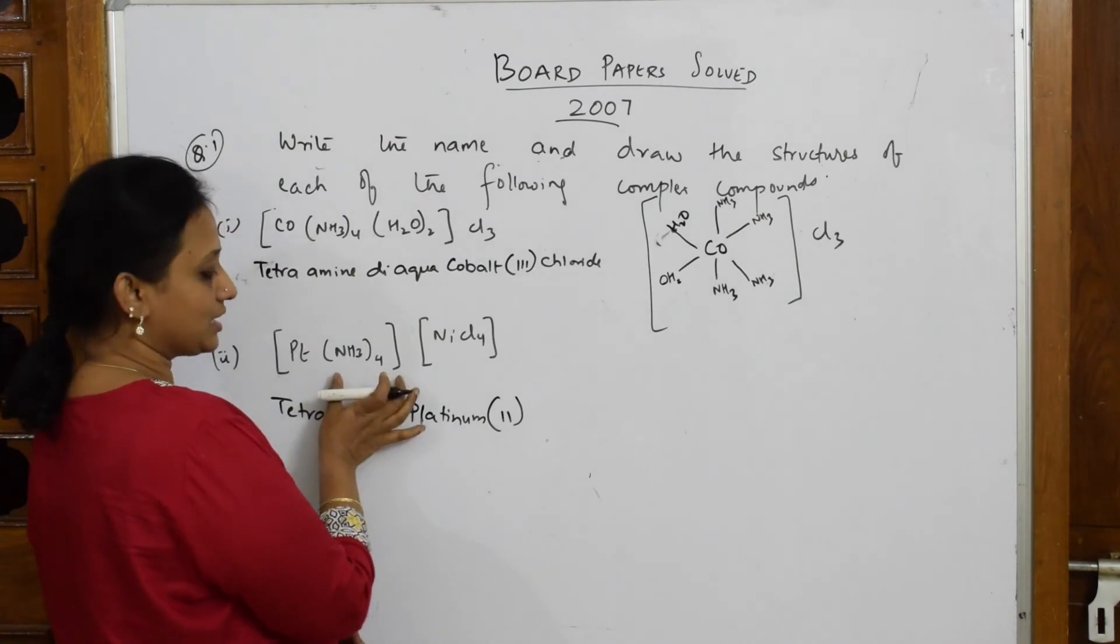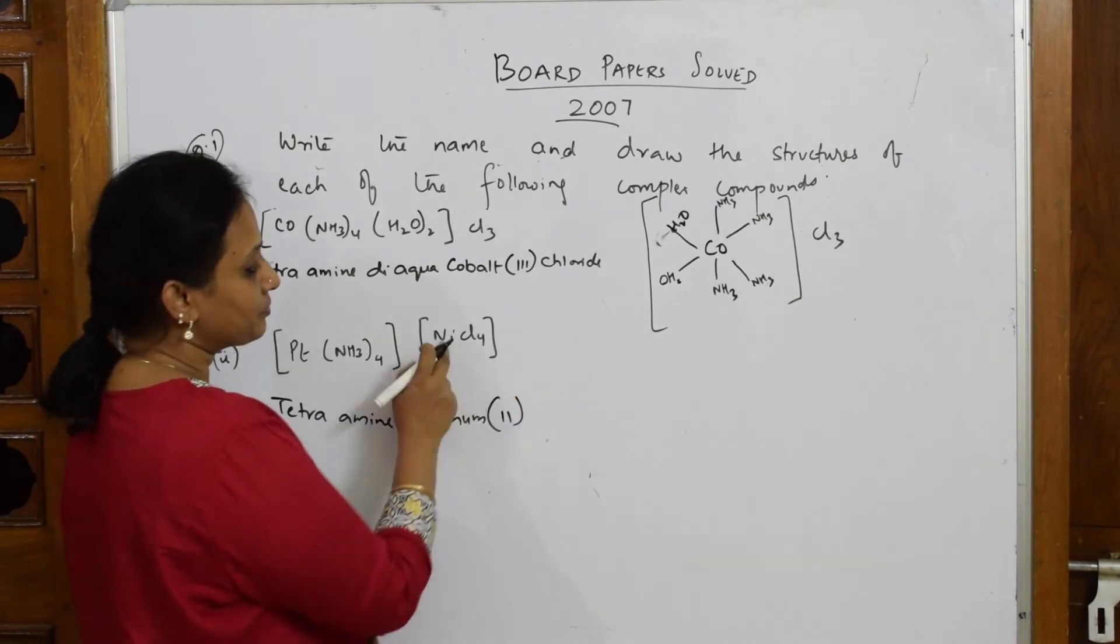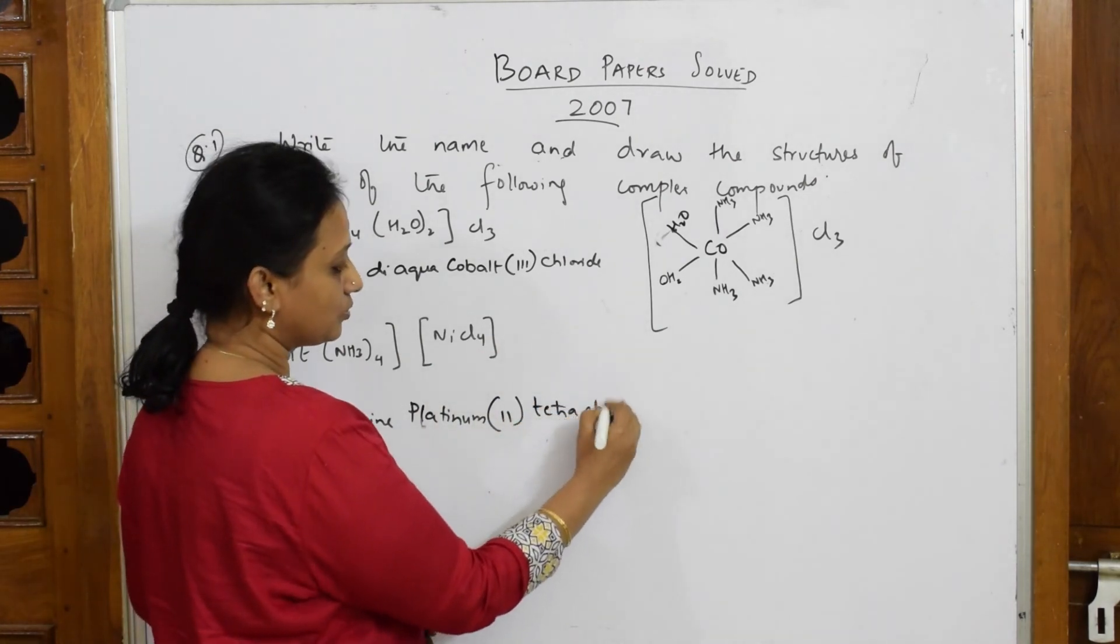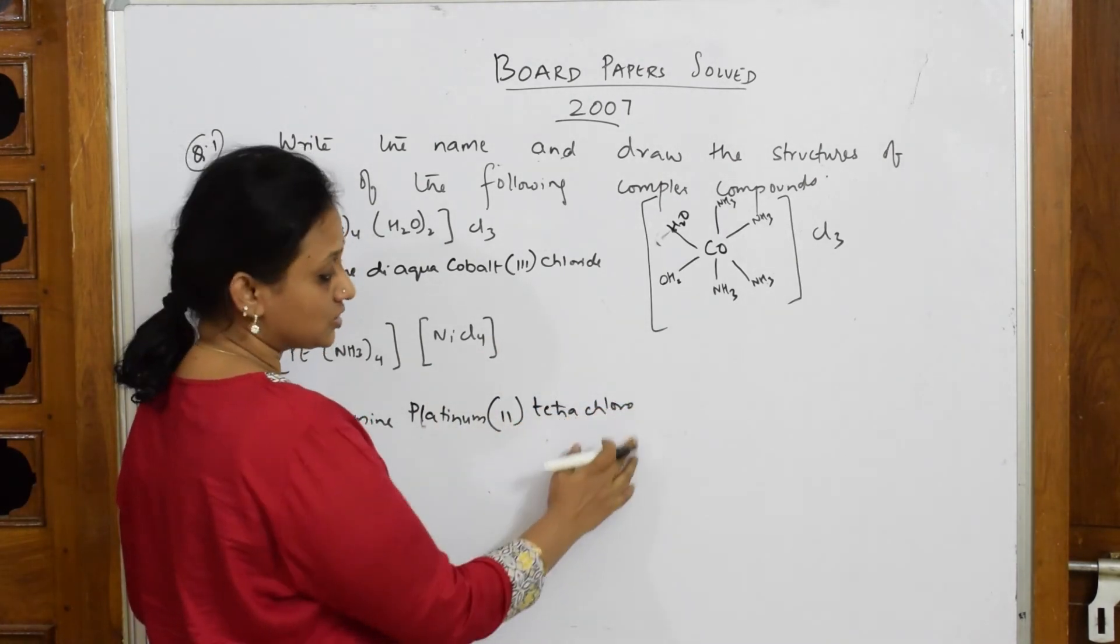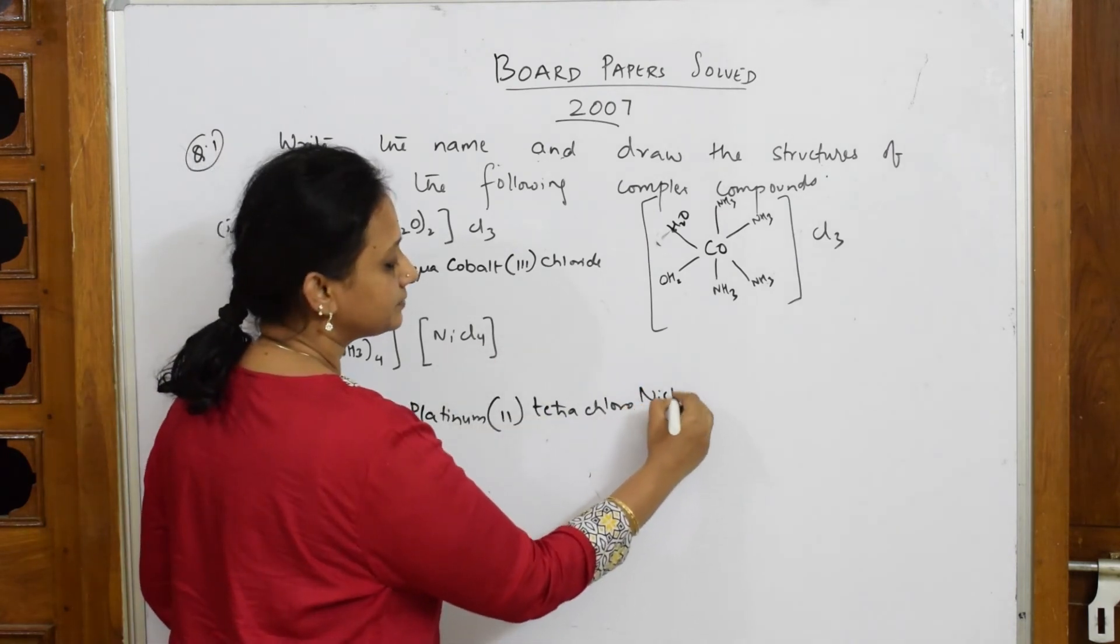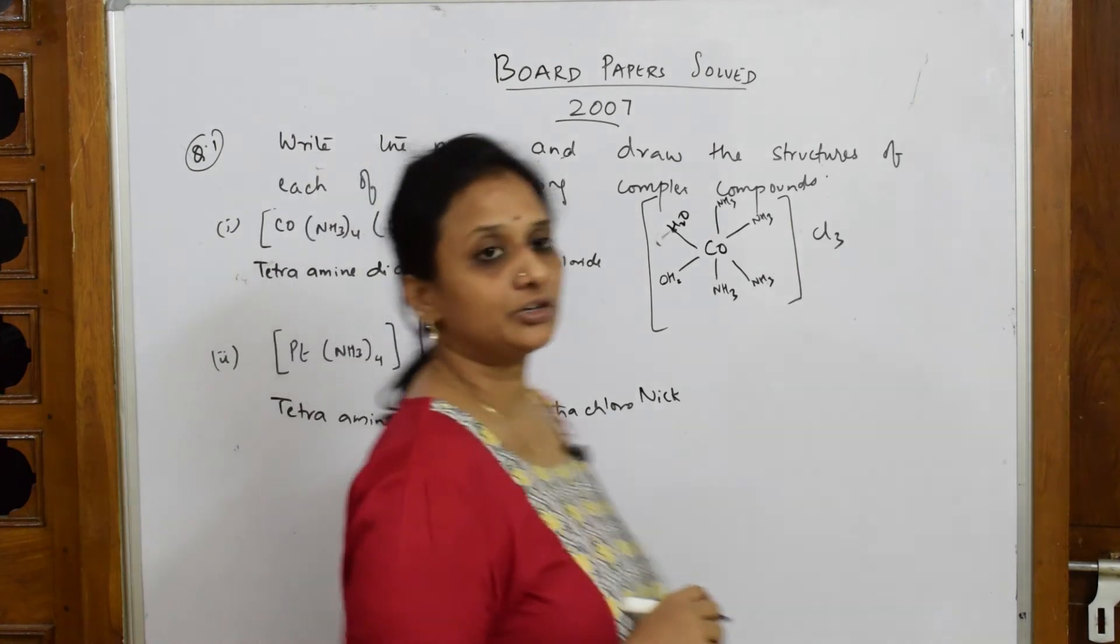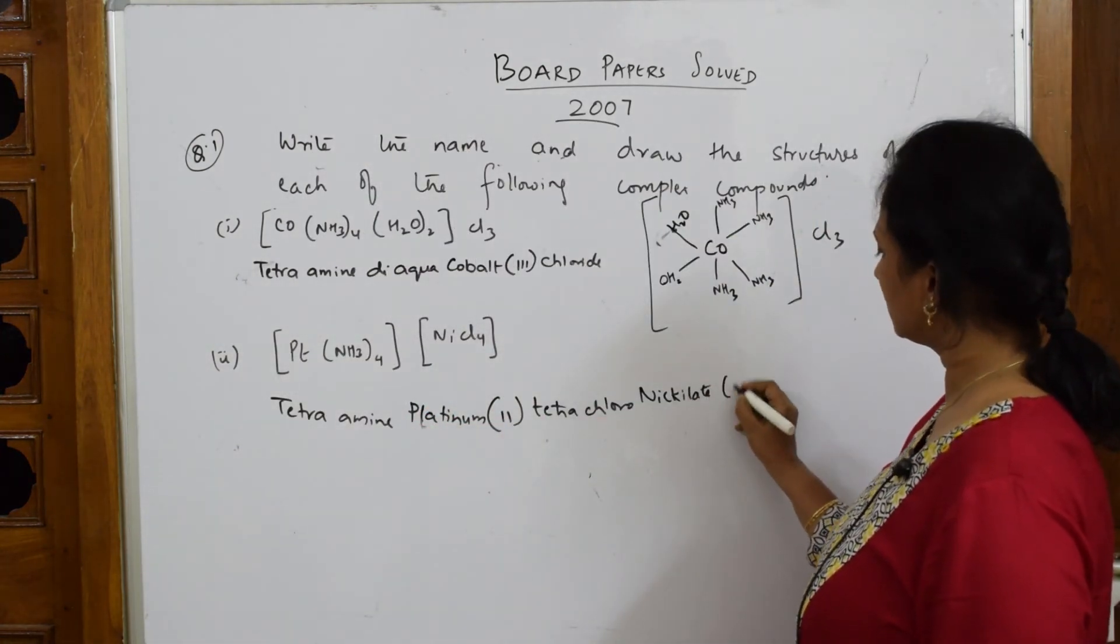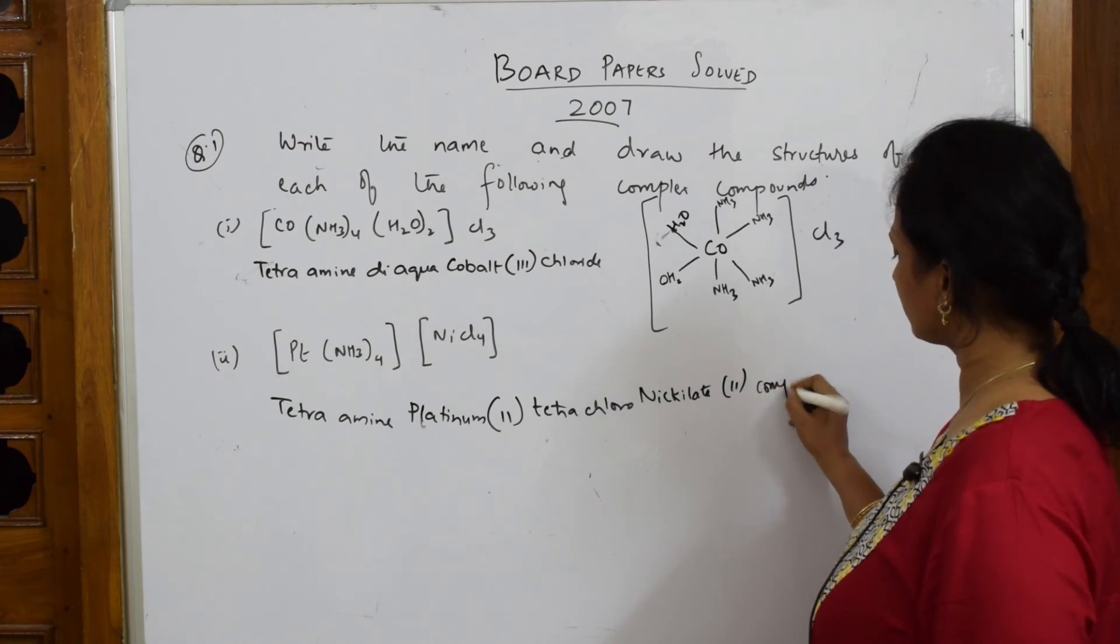Tetra-amine platinum. This is over. Let us club this now. Tetrachloro negative ligand, so O. In the formula nickel. Important here: you're going to write instead of nickel, nickelate(2). Complex.